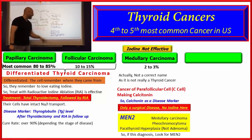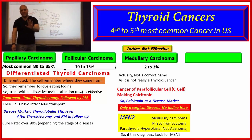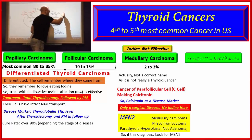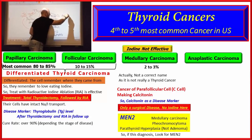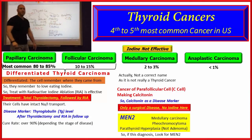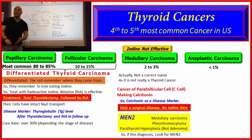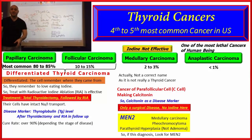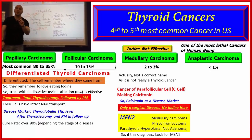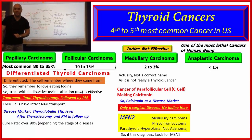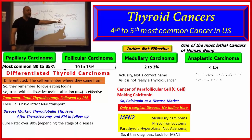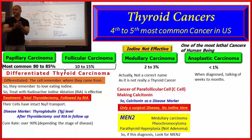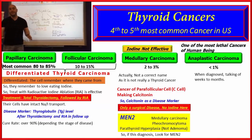Lastly, the least common carcinoma by far — thankfully — is something called anaplastic thyroid carcinoma, which accounts for less than 1% of cases. The reason I say thankfully is because this is one of the most lethal cancers known. This cancer makes small cell lung cancer look like a vacation — that's how bad this is. When this is diagnosed, you're talking weeks to months. It's very bad, very aggressive, very lethal.